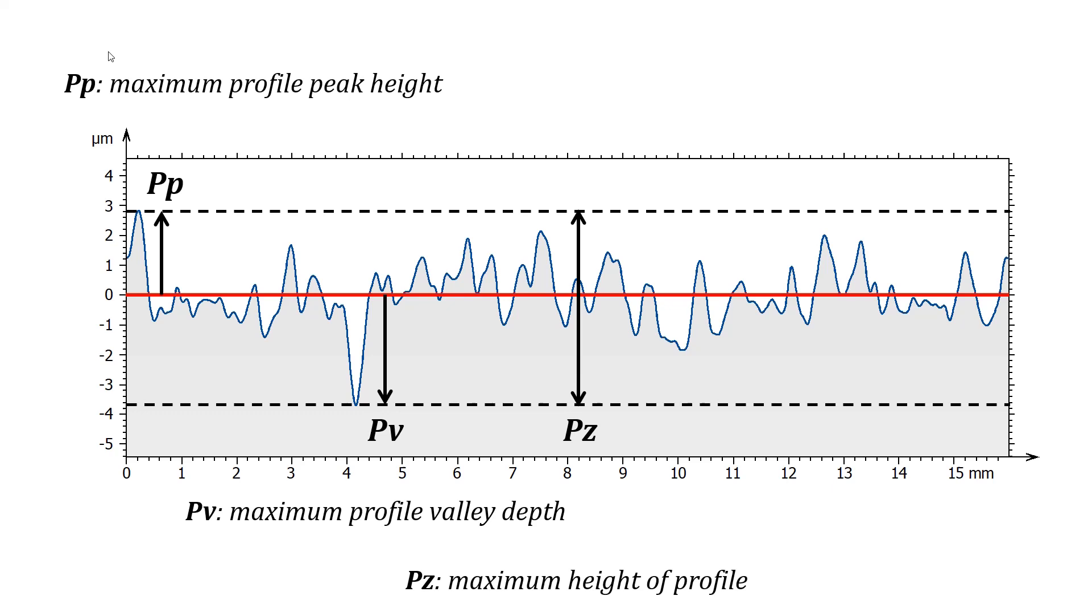The vertical distance between the highest peak and the deepest valley defines parameter pz and is called maximum height of the profile. This parameter is a first evaluation of the amplitude of texture.